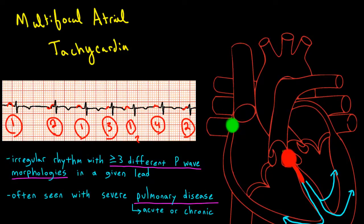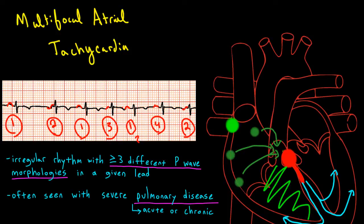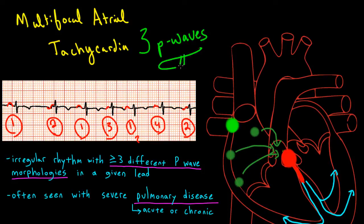Just like atrial tachycardia, there are foci outside the sinus node that can lead to atrial depolarization. Unlike atrial tachycardia, there are several different ones, each firing at their own rate. What results is an irregular rhythm with multiple different kinds of P waves. Multifocal atrial tachycardia is commonly found in patients with severe pulmonary processes, such as advanced COPD or acute respiratory failure. In order to diagnose multifocal atrial tachycardia, you have to have at least three different types of P waves.